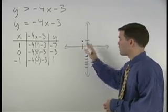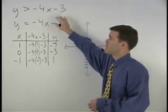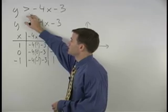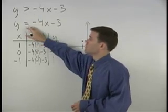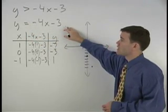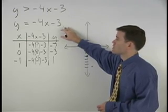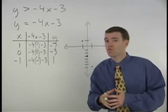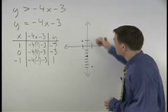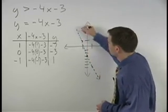Before graphing a line through these points, however, let's take a look back at the original inequality. Notice that y is greater than negative 4x minus 3. It is not equal to negative 4x minus 3. So the line y equals negative 4x minus 3 is not a part of the solution set. However, it does form a boundary on the graph. So to represent this idea, we draw a dotted line through our points.